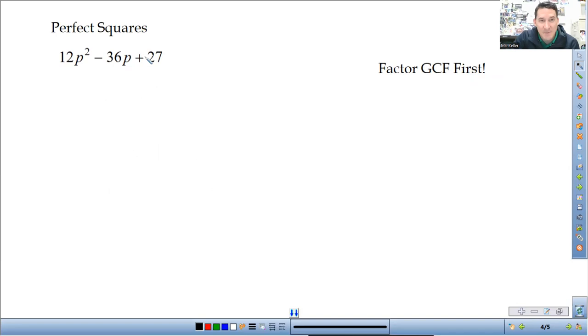Next one. That says perfect squares. This is not a perfect square. At least, not yet. We need to do some factoring here. So, 12, 36, and 27. What's the largest number that those three things have in common? Again, if you need to factor everything out and spread things out and work it out. But the largest factor is going to be 3. So, then, I'll have 4p squared. 36 divided by 3 would be 12p. And then, 27 divided by 3 is 9.